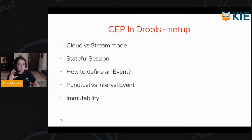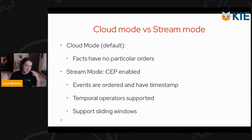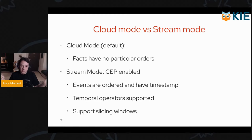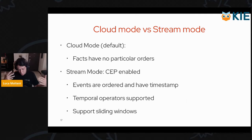Let's discuss some of the details and how CEP is actually implemented in Drools. By default, Drools runs in what is called cloud mode. Cloud mode is the default in which facts don't have any particular order, and you basically cannot use CEP with cloud mode. To use CEP, you have to enable stream mode, in which every event inserted in Drools will have an order and a timestamp, and you can use temporal operators and sliding windows.